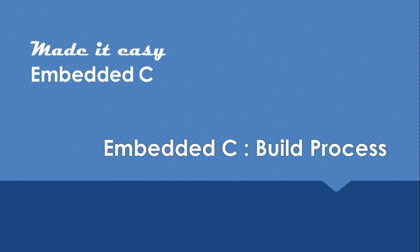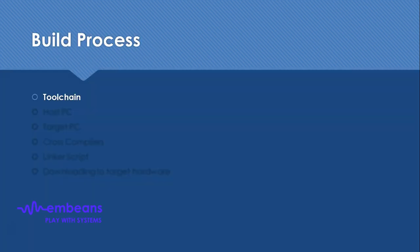Let us see what the different tools are that will be used in the build process for embedded C. All the tools required to build successful code that will work for the target embedded system are called the toolchain. A toolchain is basically a set of tools required for a specific architecture of the embedded system to generate code from the host PC, automating the code generation process in a step-by-step manner.